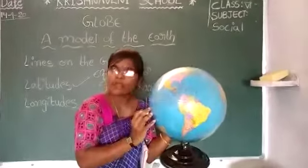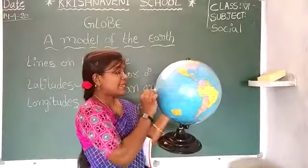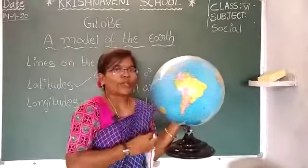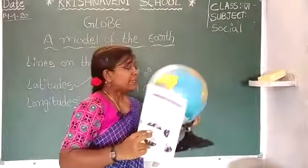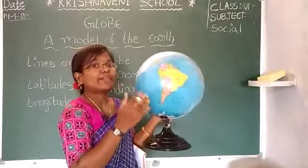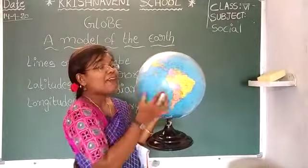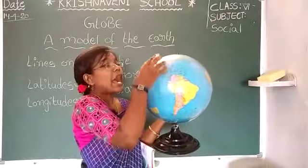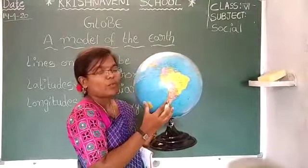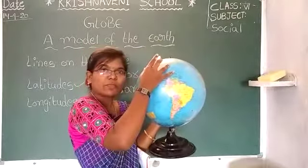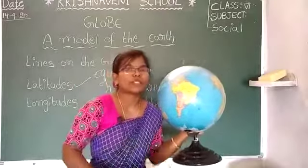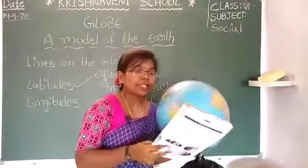All the circles are not the same size. The longest one is in the middle and the smallest one at the pole is not a circle but a small dot. The equator divides the earth into two halves — top half and bottom half. This half we call a hemisphere. Hemi means half and sphere means round. The top one is called the northern hemisphere and the southern one is called the southern hemisphere. The equator divides the earth into two equal halves.